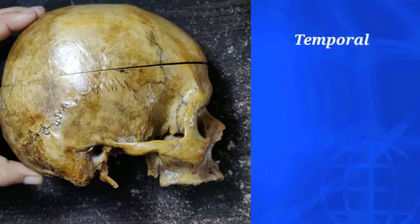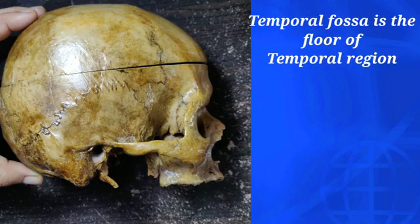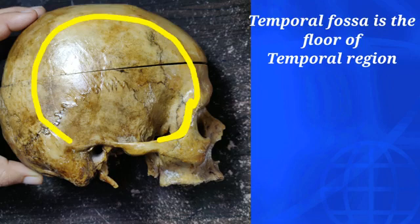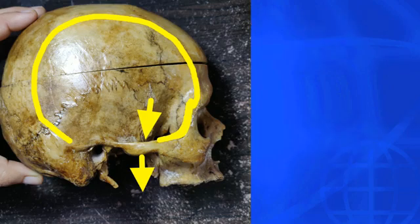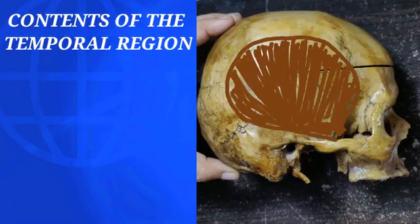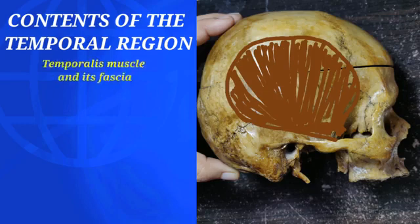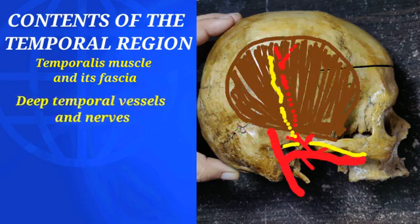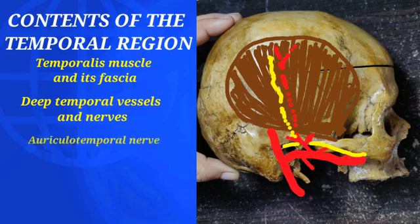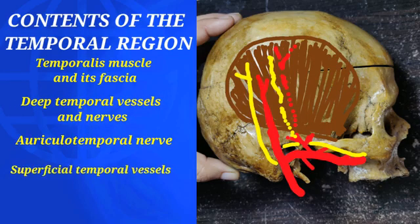The temporal fossa forms the floor of the temporal region, present behind the frontal process of the zygomatic arch and below the superior temporal line. It communicates with the infratemporal fossa beneath the zygomatic arch, which forms its only communication. The contents of the temporal region are the temporalis muscle and its covering fascia called temporal fascia, deep temporal nerves and vessels, auriculotemporal nerve, and superficial temporal vessels.